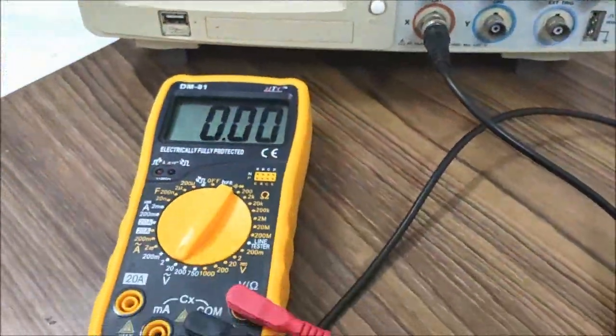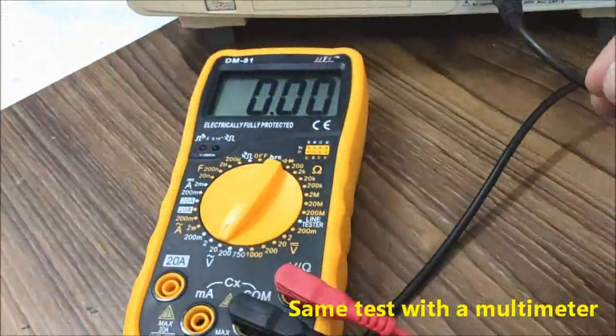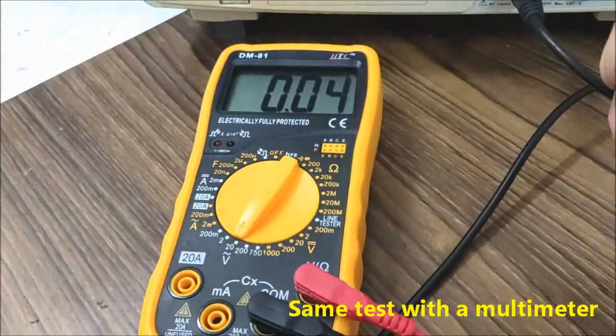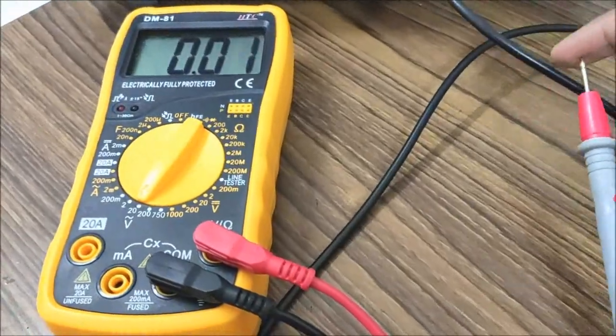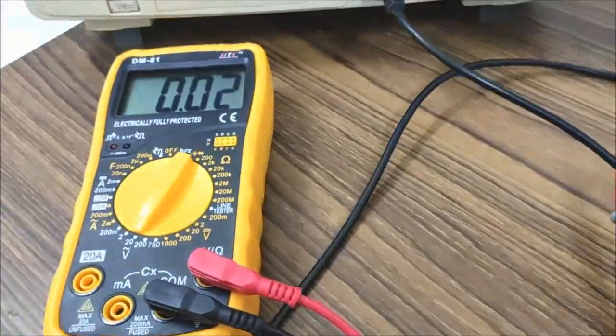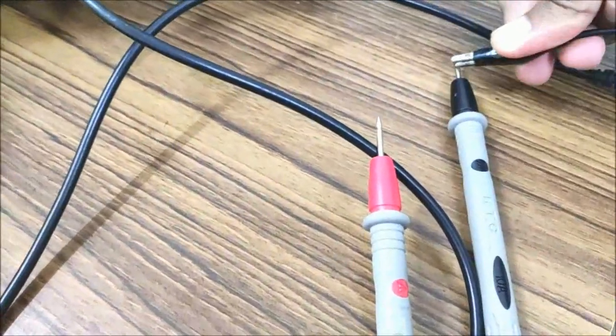Let's see the same measurement by multimeter alone first, then combined with the oscilloscope side by side. The multimeter function selector is at 20 volt AC. When I touch the positive terminal of the multimeter, it shows negligible voltage.